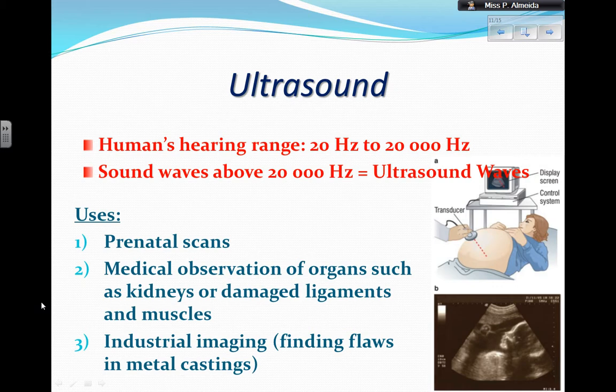Ultrasounds, as you know, are how some animals communicate or navigate. They also have medical and industrial uses. Medically, they can be used in prenatal scans — checking for babies — and they work on people or animals alike. They are also used for medical observations of organs such as kidneys, or for damaged ligaments and muscles, and in industrial imaging to find flaws in metal castings.